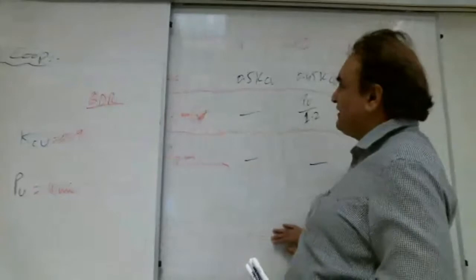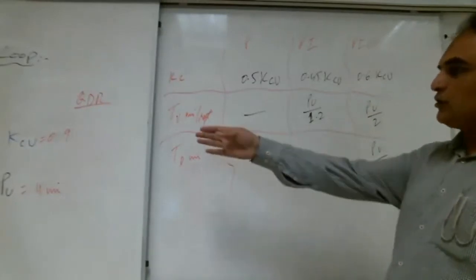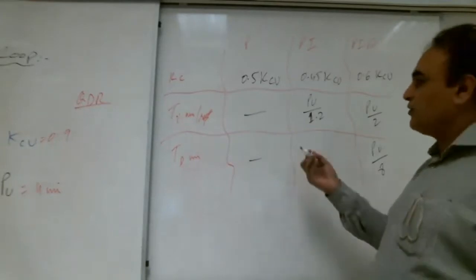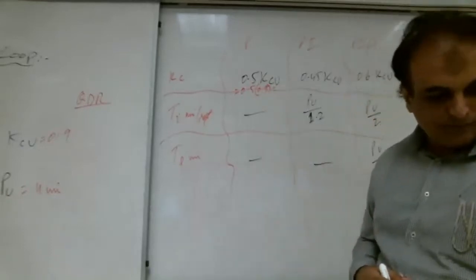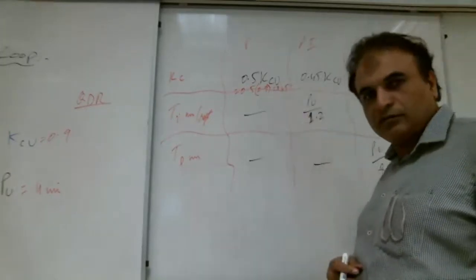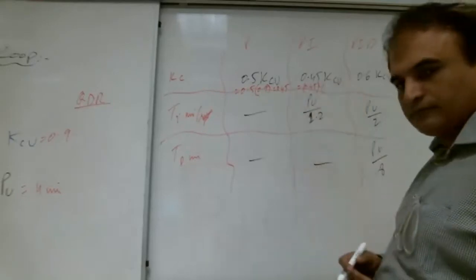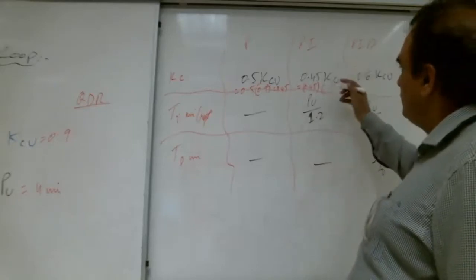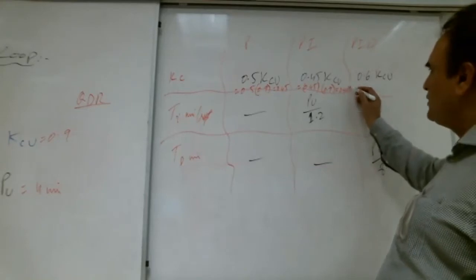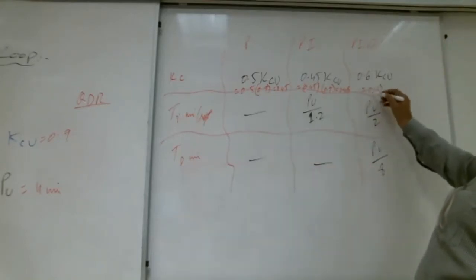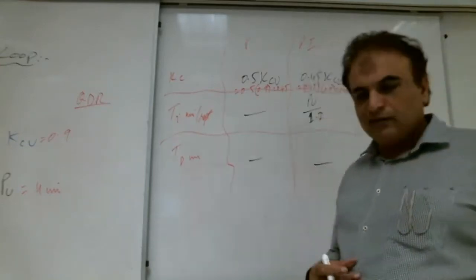He is asking us to find the QDR parameters. These are the QDR parameters — we simply put the values in the table and calculate them. So 0.5 into kcu: how much is kcu? 0.9. And 1.45 into kcu: 0.9 gives 0.405. Then 0.6 into kcu: 0.9 gives 0.54.